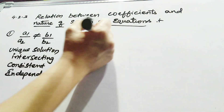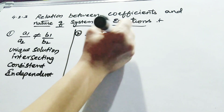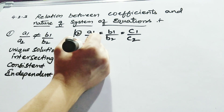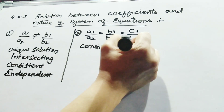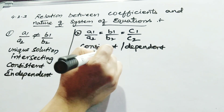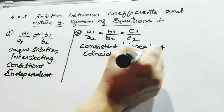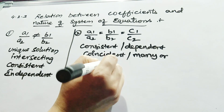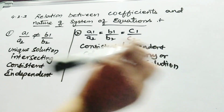The second condition: if a1 upon a2 is equal to b1 upon b2 is equal to c1 upon c2, this is called consistent and also a dependent graph. This kind of graph is a coincident graph. It has many, or infinite, number of solutions.